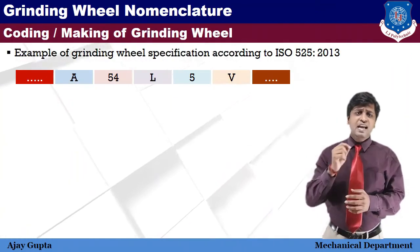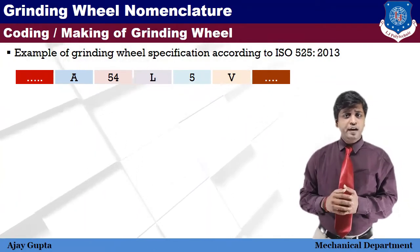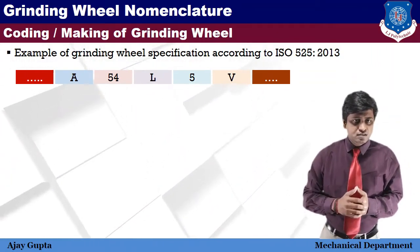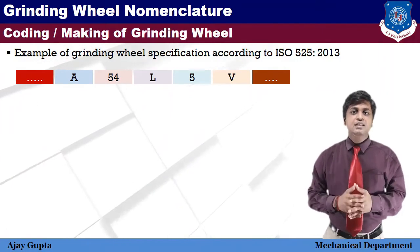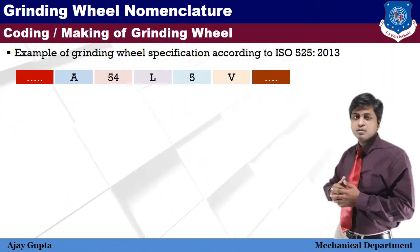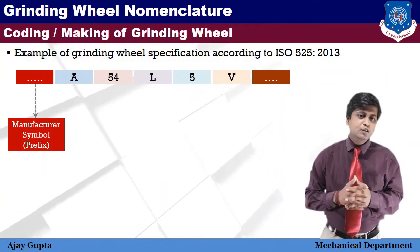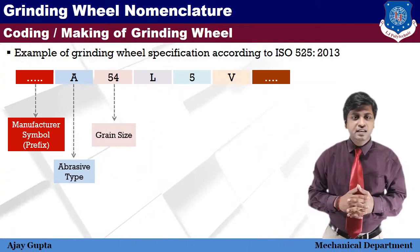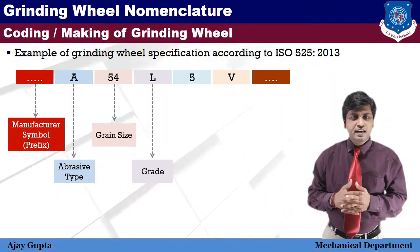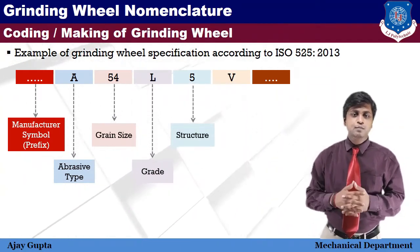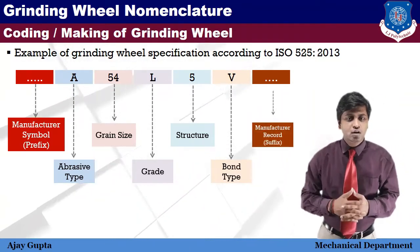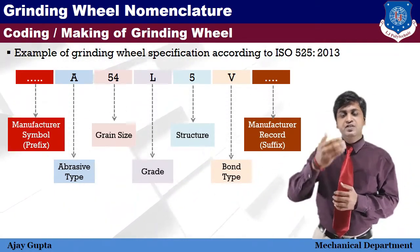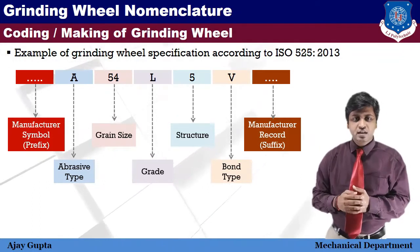An example of grinding wheel specification according to IS 525 of 2013 is shown in the chart. The chart contains a series of characters: first, the manufacturer symbol (prefix); second, 'A' for abrasive type; third, '54' for grain size; then 'L' for grade; next '5' for structure; then 'V' for bond type; and last, the manufacturer record or suffix.